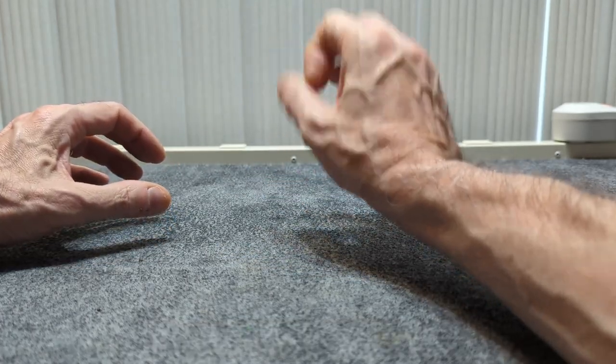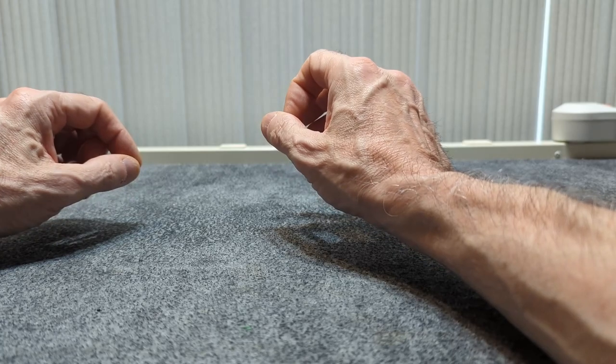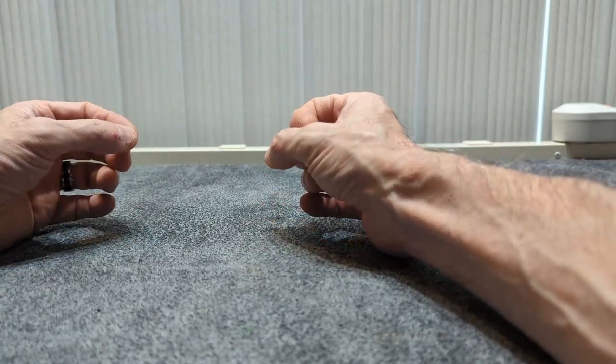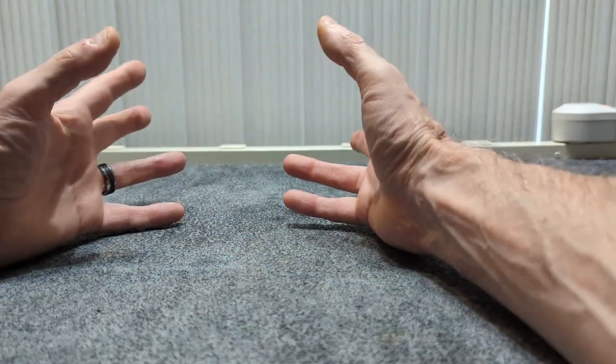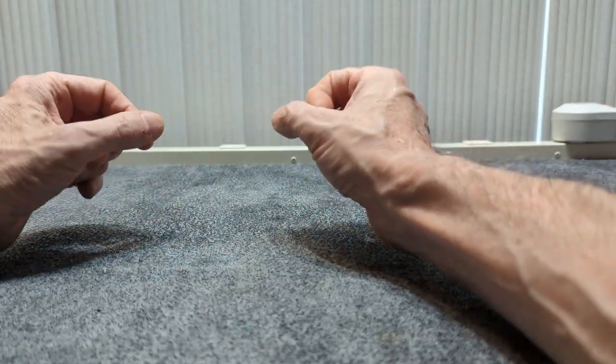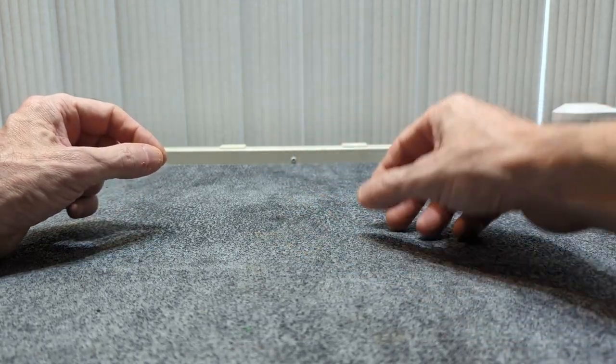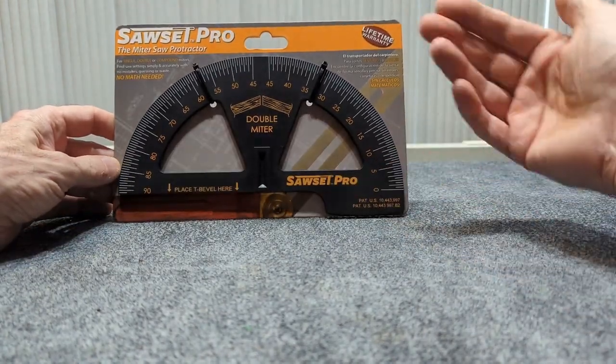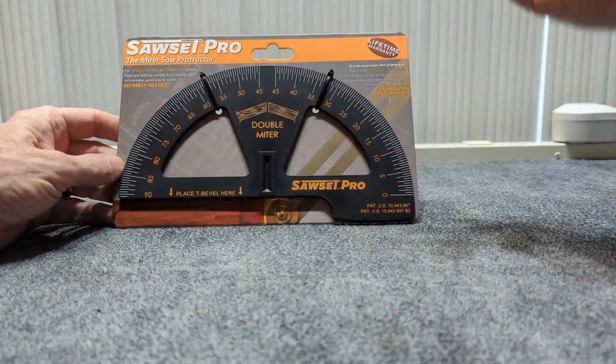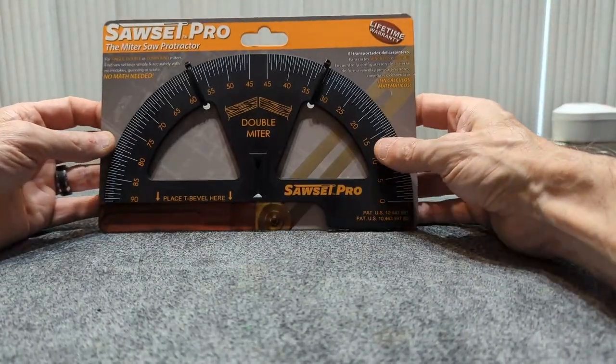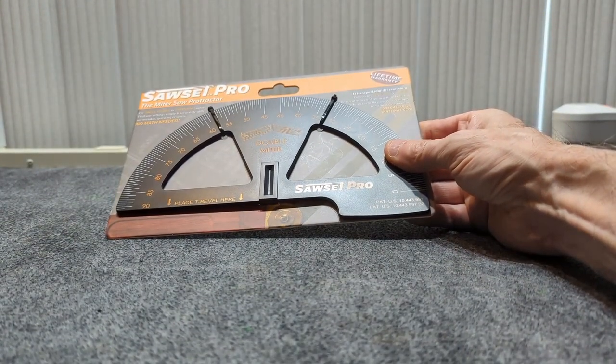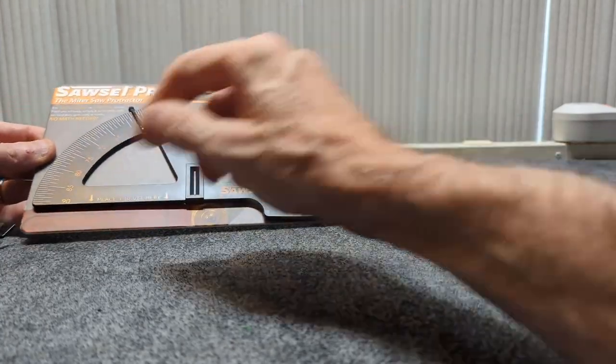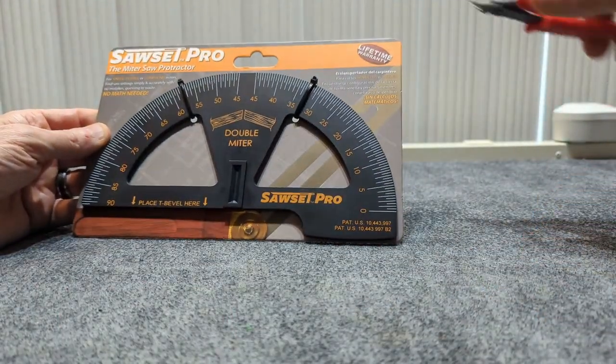In the past you have probably recalled that I have done a few videos on angle finders, and with that in mind, Erwin has invented something that he calls a Sawset Pro. Still even in the packaging, I haven't even had a chance to even open it yet. But this is another angle finder but a truly simplistic one in and of itself.